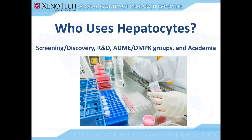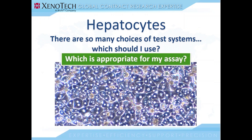Now that we have a better understanding of the various hepatocyte test systems, let's talk about who uses them and how you should choose which hepatocyte test system will best suit your needs. A lot of different groups use hepatocytes, especially in the drug development field — screening discovery groups, R&D, ADME/DMPK groups, and academics. Their uses vary quite a bit, from drug development and safety all the way to pathogen-host interactions and general biology and biochemistry. Not all hepatocyte test systems are appropriate for all assays, and to help you wade through these choices, we made a flowchart to help you narrow down which test system will work best for your experiments. This flowchart isn't all-encompassing, but if you have a question, please feel free to give us a call or shoot us an email.